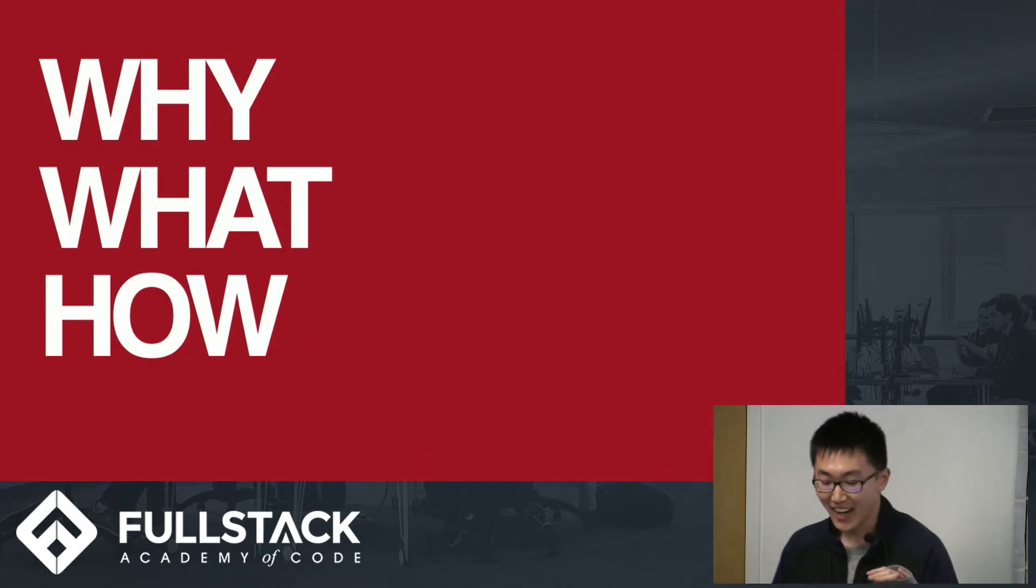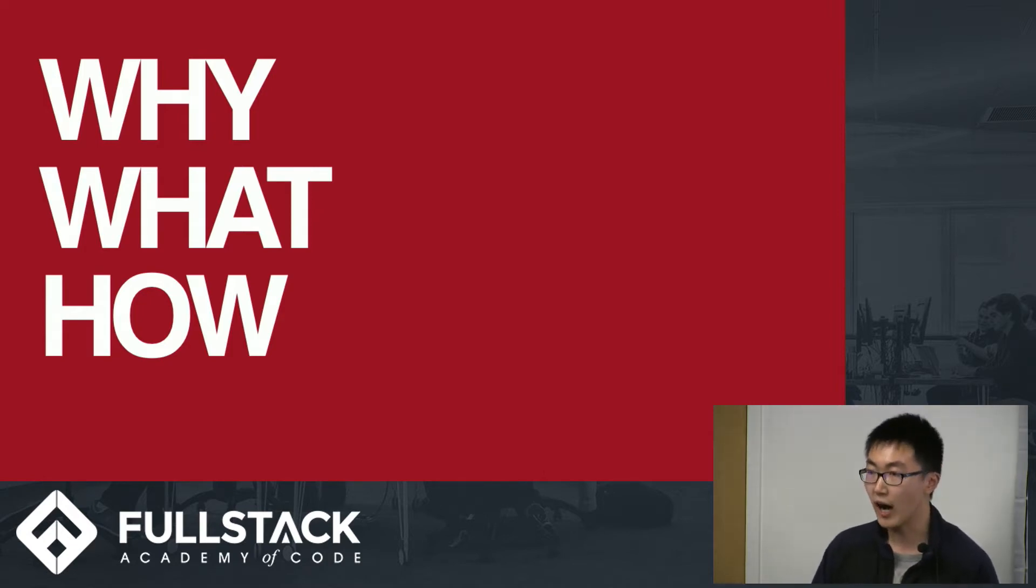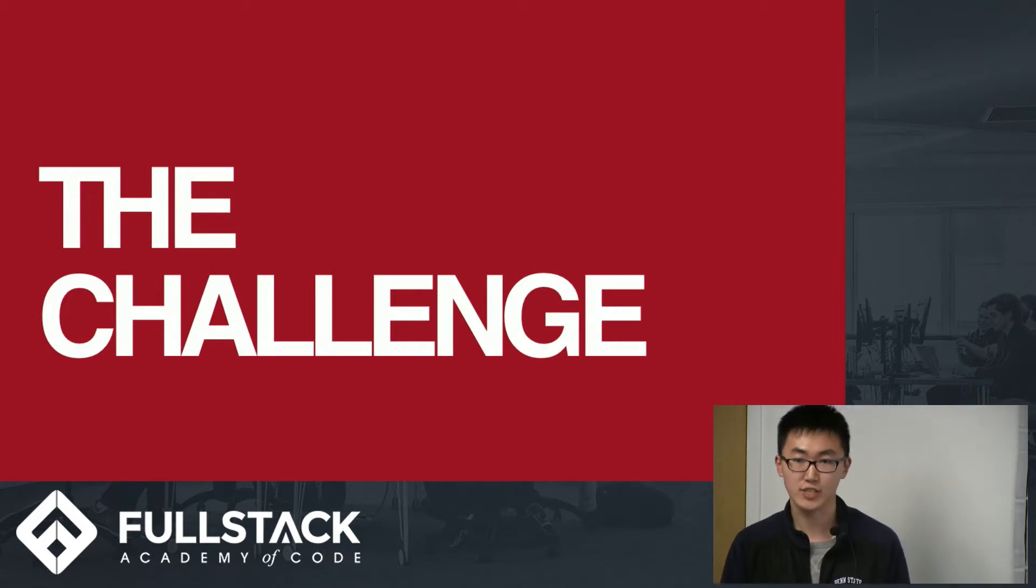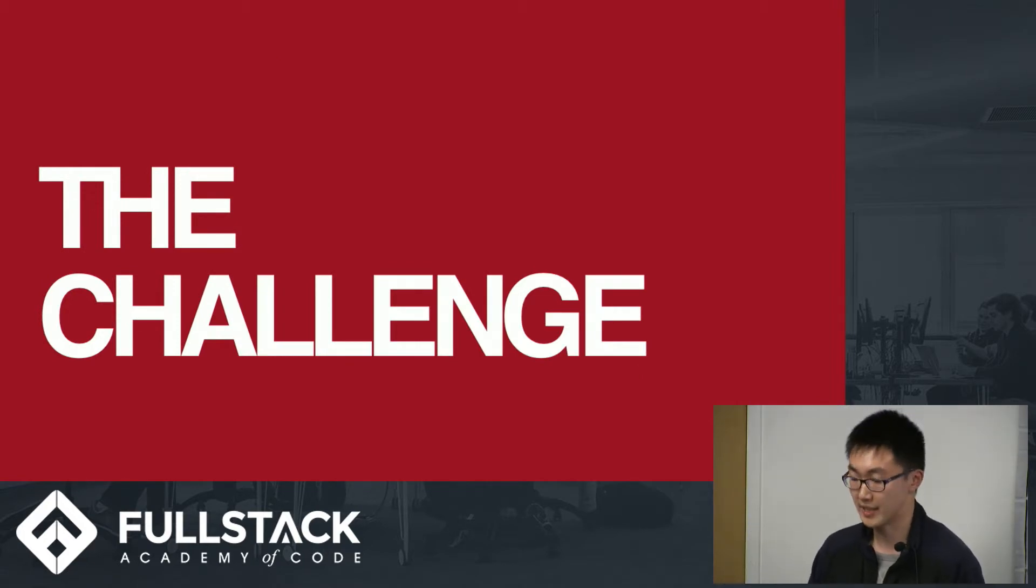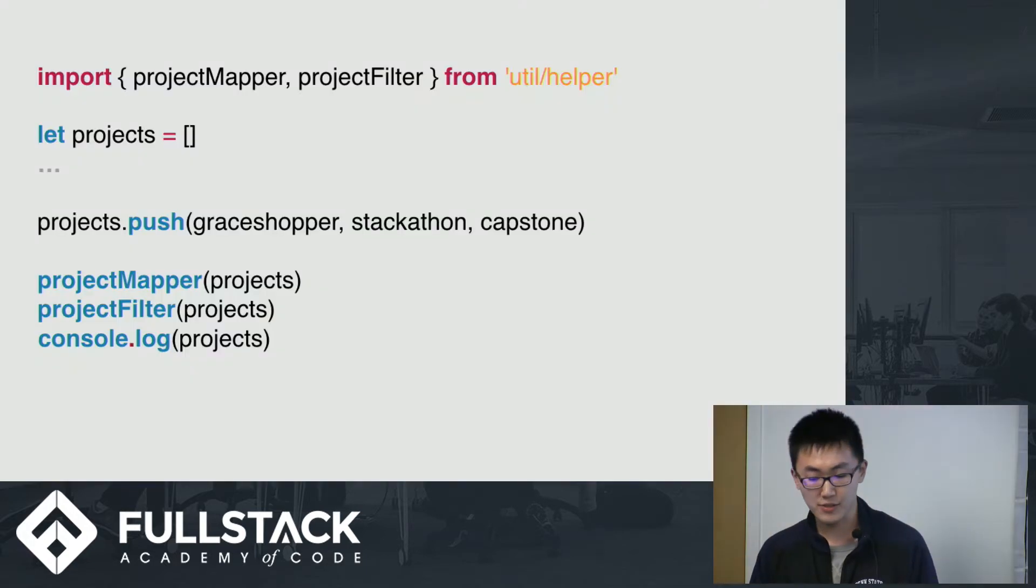We're going to actually work through why we should care about immutable data structures, what they are in terms of how they're implemented, and also how we can use them in JavaScript. What is the challenge that immutable data structures try to solve that we might be interested in? Let's take a look at this example and see if we can identify what's the problem.